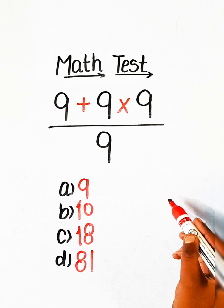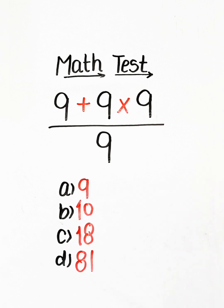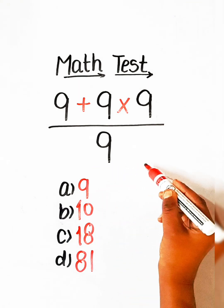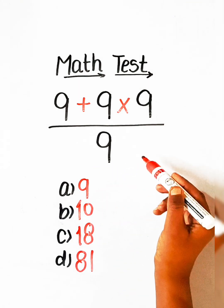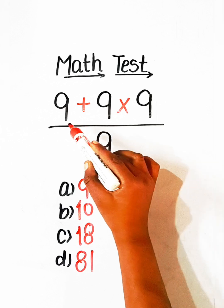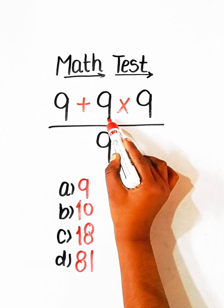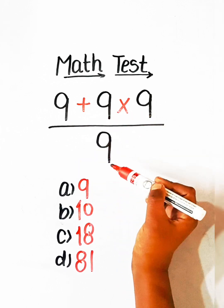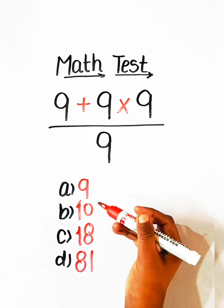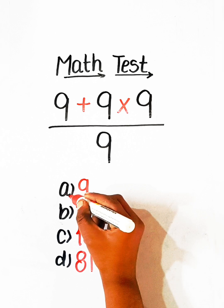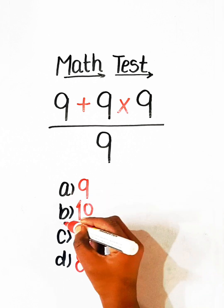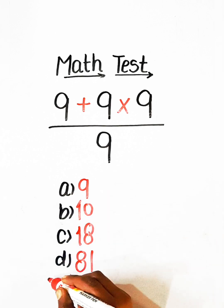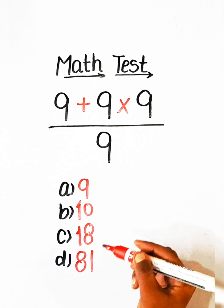Hello everyone. In this video we will solve this basic math equation: 9 plus 9 multiplied by 9, divided by 9, equals to what? Option A: 9, Option B: 10, Option C: 18, Option D: 81.